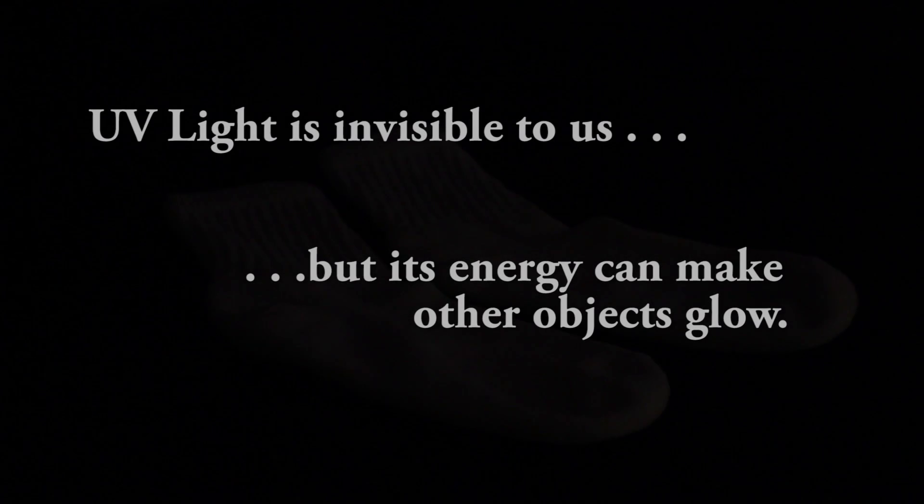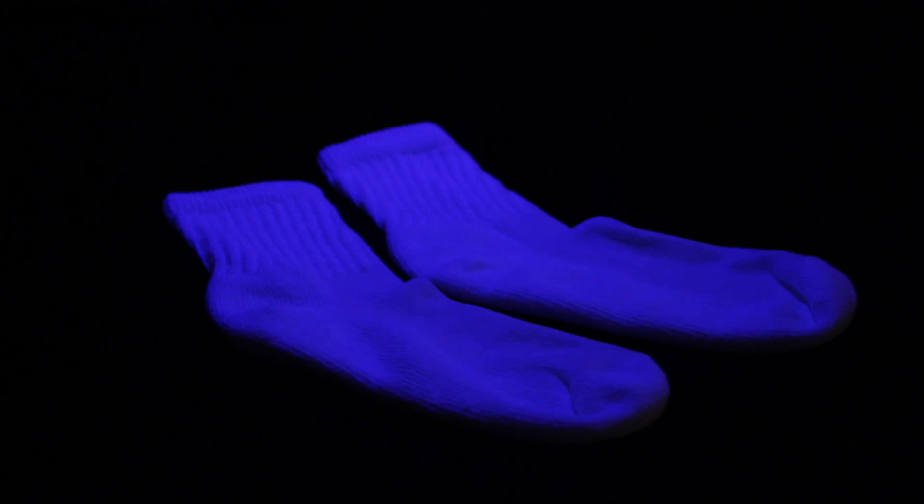UV light is invisible to us, but its energy can make other objects glow, like this pair of socks. They absorb the UV light and release that energy as visible light. It's actually the detergent residue that glows and makes them look really clean, whiter than white.